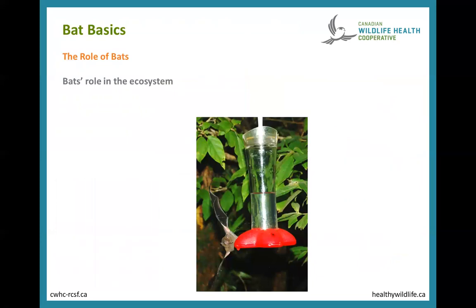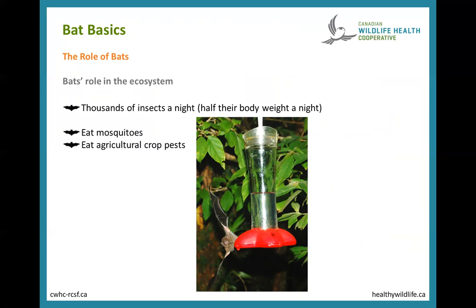Bats are very important — that's another reason why we want to study and protect them, because they have an important role in the ecosystem. All bats in Canada eat insects, and they eat lots of them — thousands of insects per bat per night. Lots of these insects are mosquitoes. But more so than mosquitoes, bats eat a lot of beetles, flies, and moth species — many of the insects that eat our agricultural crops like lettuce, potatoes, and tomatoes. So bats are performing a pest control service for us.